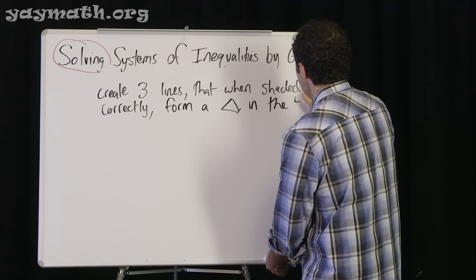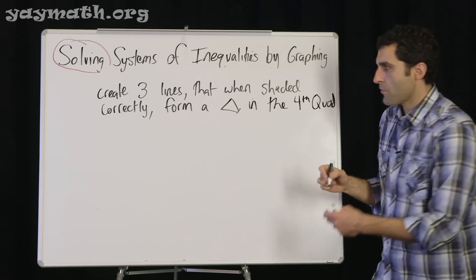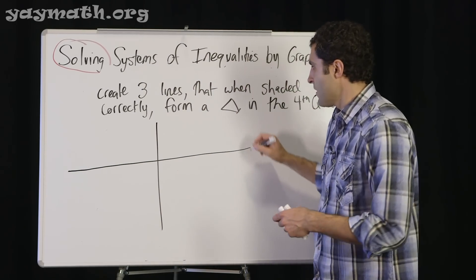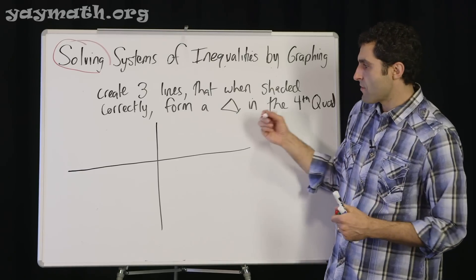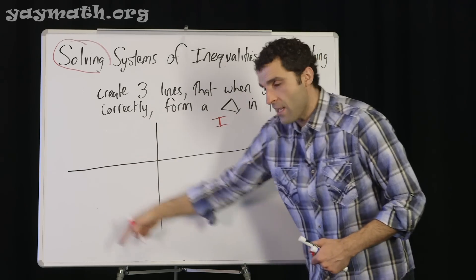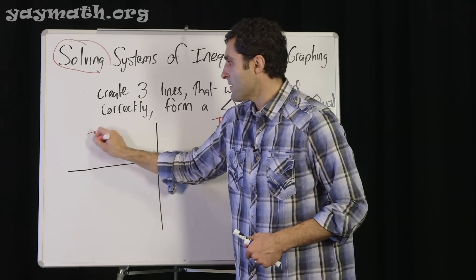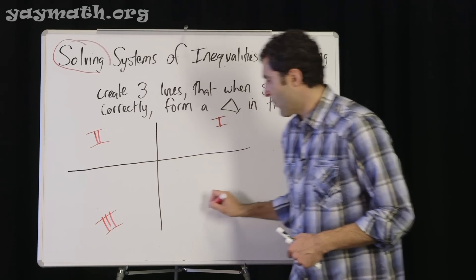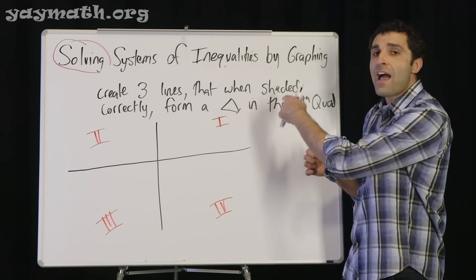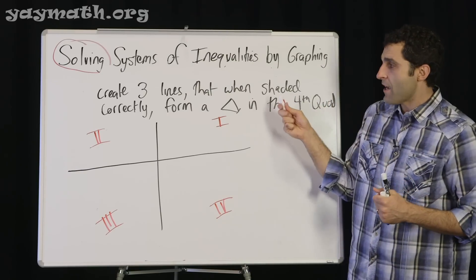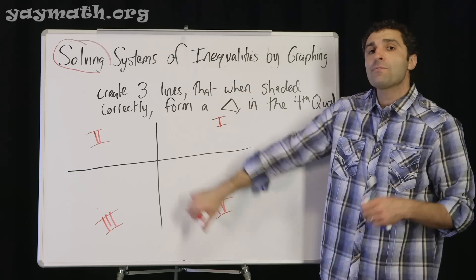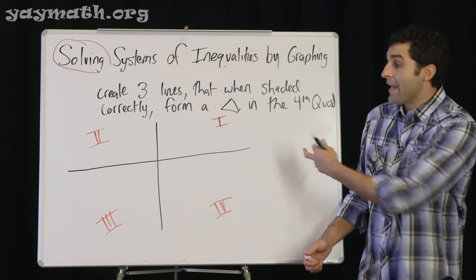A reminder of the quadrants: starting upper right where x and y are both positive is the first quadrant, going counterclockwise to second, third, and fourth. The goal is to create your own lines — any lines you want — to form a shaded triangle anywhere in the fourth quadrant, and make sure it's appropriately shaded.